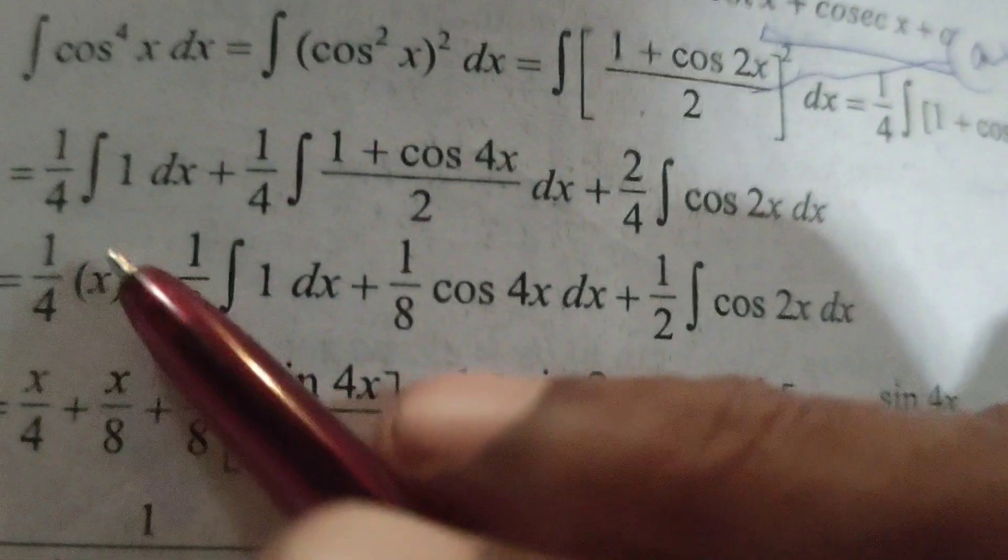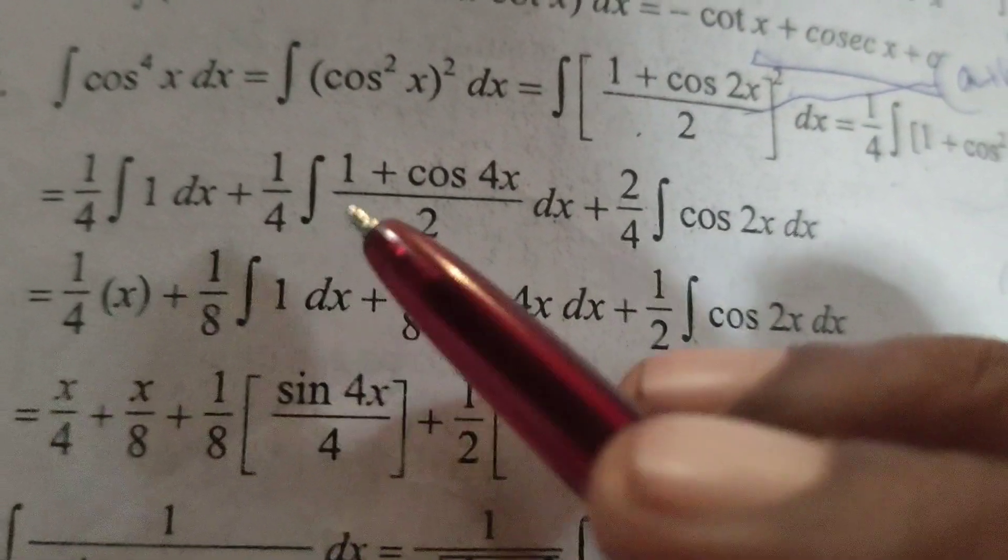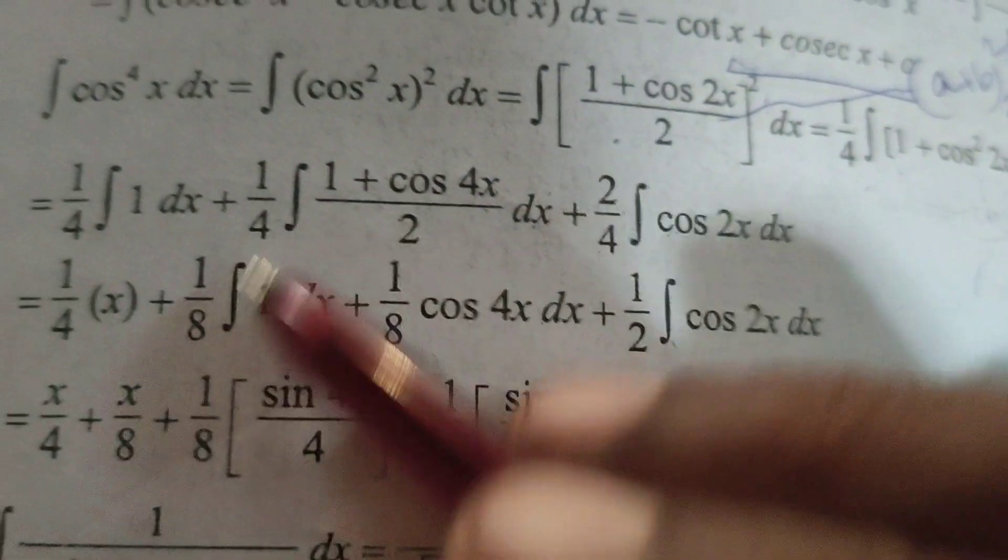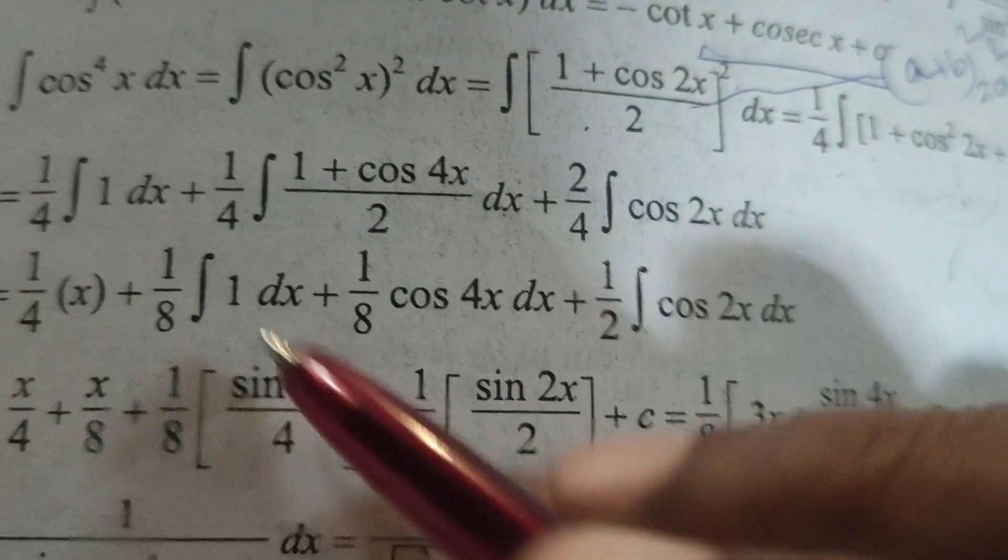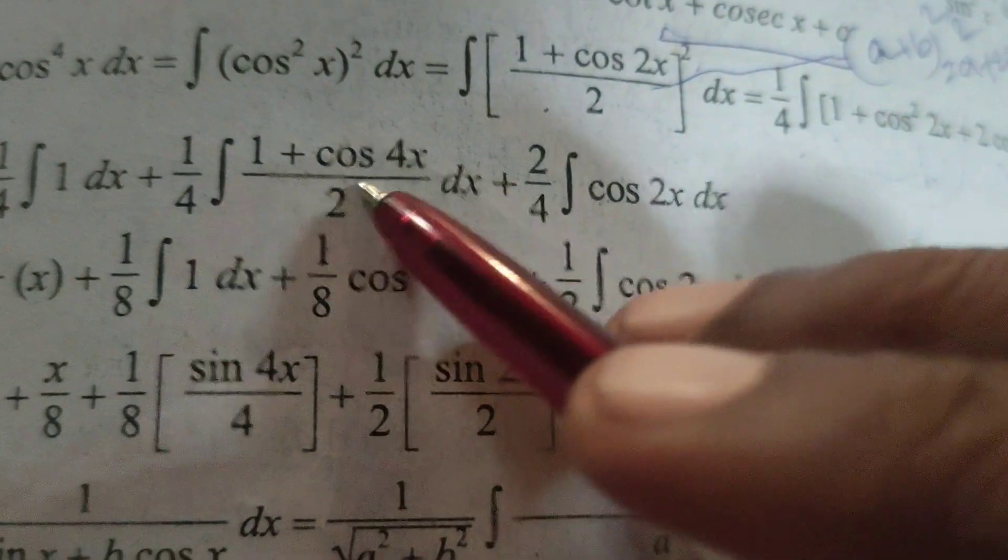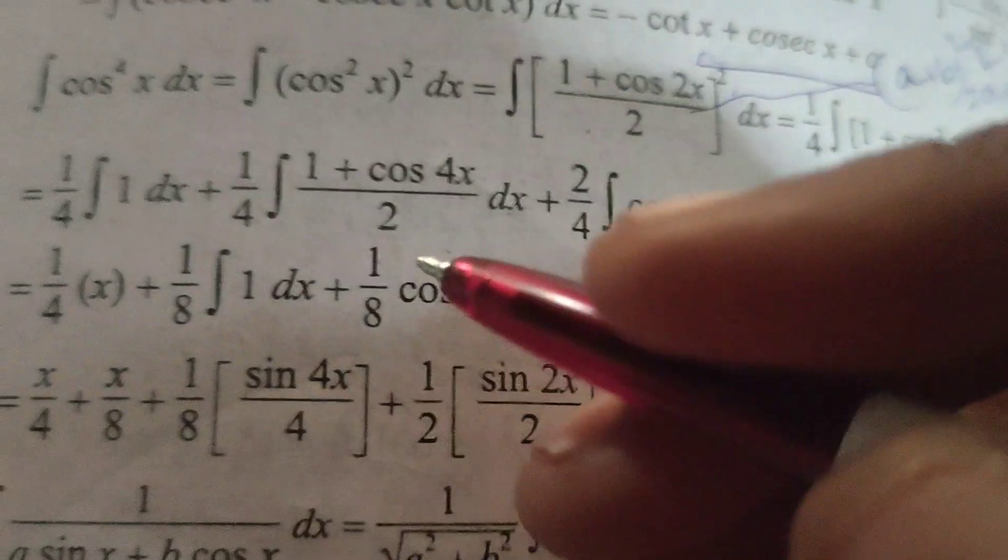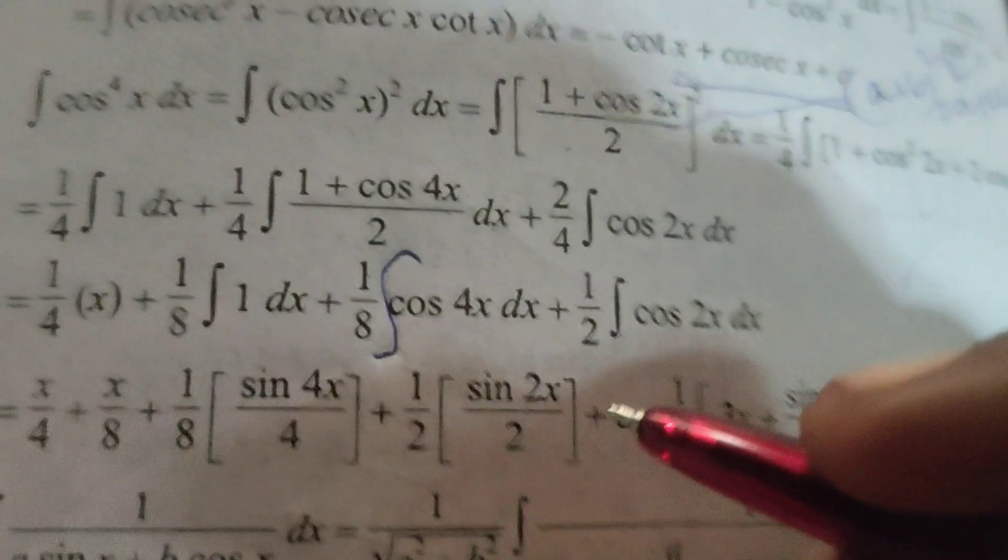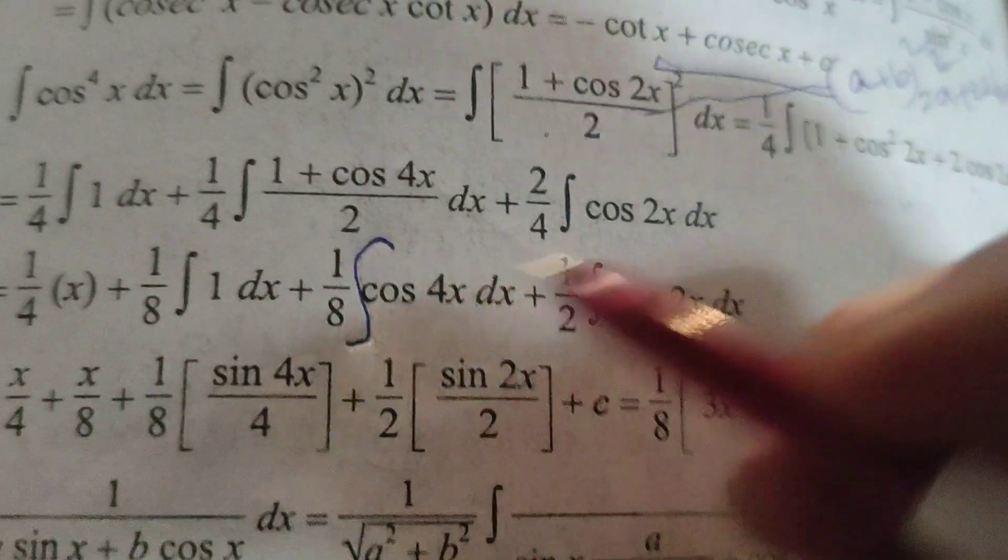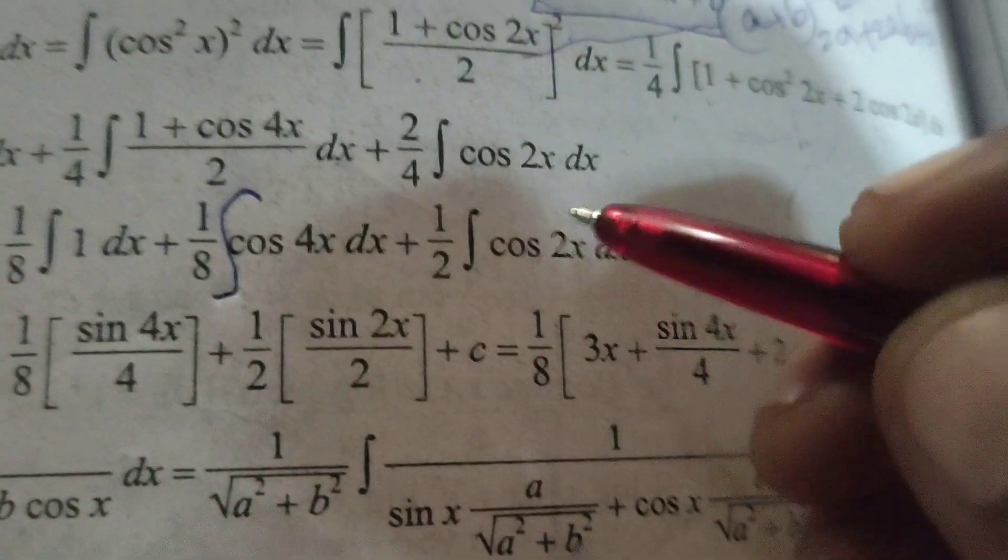Now integrating, 1 by 4 integral 1 dx means x plus 1 by 4, 2's are 8. So 1 by 8 integral 1 dx plus 1 by 8 integral cos 4x dx, plus here 1 by 2 integral cos 2x dx.